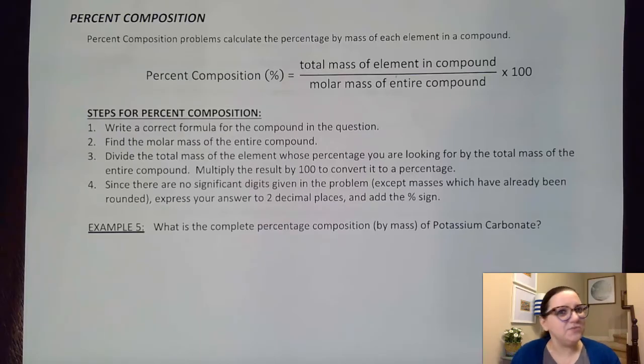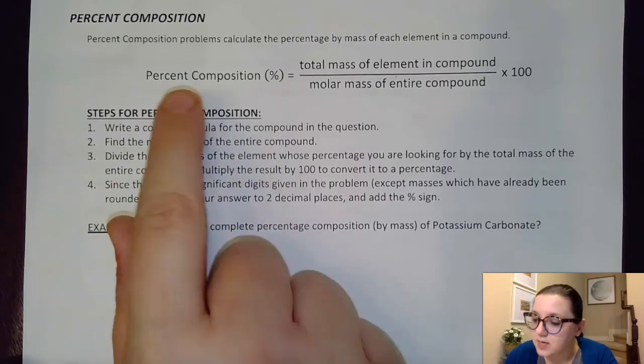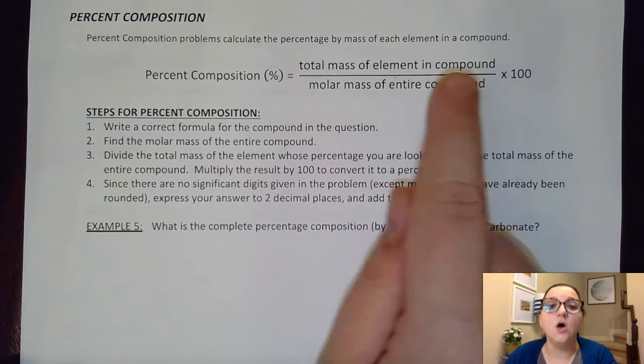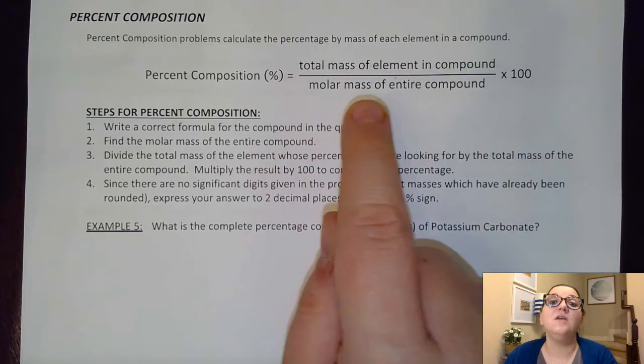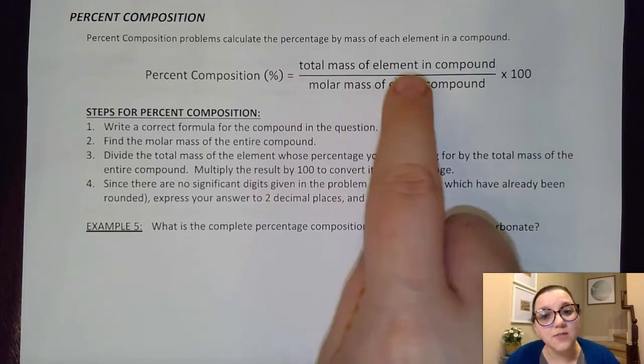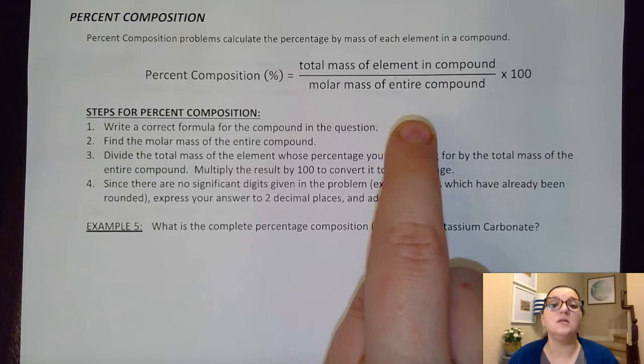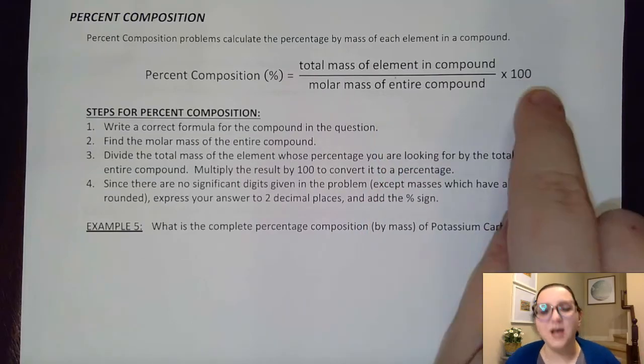And so you'll see this formula is no different. The percent composition is equal to the mass of each element in our compound over the molar mass of the entire compound. So the part that's the element over the entire total molar mass, the whole thing, times 100.